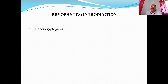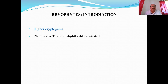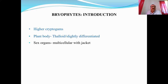Those plants which show advanced characters in the cryptogames are called higher cryptogames. These characters include the plant body, which is thaloid in lower cryptogames, but here it may be slightly differentiated or differentiated into organs like roots, stem, and leaves. In lower cryptogames, it is thallus — an undifferentiated plant body without roots, stem, and leaf system. Sex organs are always multicellular with a sterile layer of jacket cells, protecting the male and female sex organs.